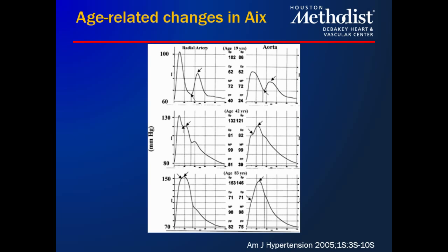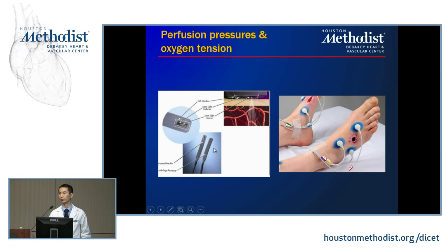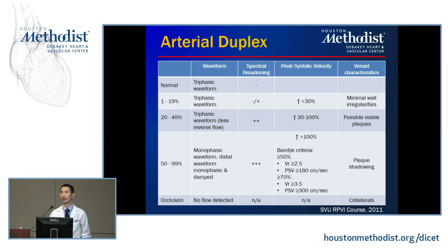Other tools in the vascular lab include laser Doppler for skin perfusion pressures, assessing signs of poor perfusion, and transcutaneous oxygen tension using silver-platinum electrodes that pick up oxygen coming off the skin. When stenosis needs to be confirmed, this is coupled with an arterial duplex, which has extensive criteria for grading.